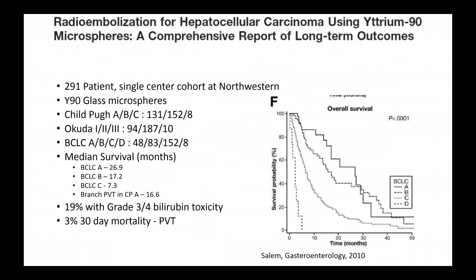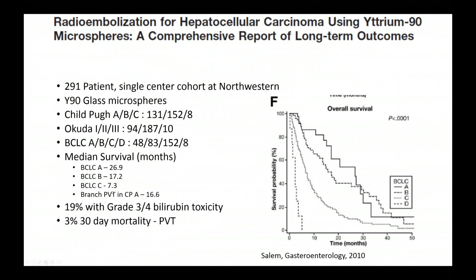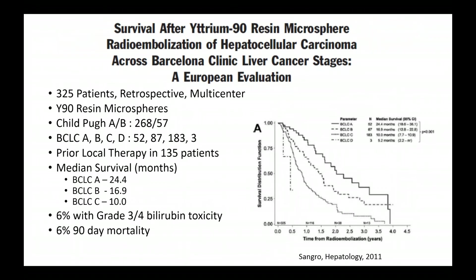Looking at outcomes: a Northwestern paper on Y-90 glass microspheres shows median survival varying by BCLC stage for BCLC A, B, and C patients. Comparing this to a European cohort from Spain using resin microspheres, the BCLC A, B, and C survival numbers are almost identical. There is not a significant difference in efficacy between the two devices. There is a slight difference in the way the devices are delivered and handled, but overall the efficacy of both is very similar.